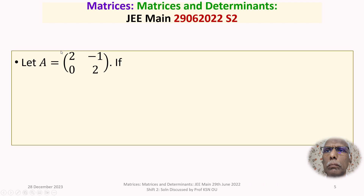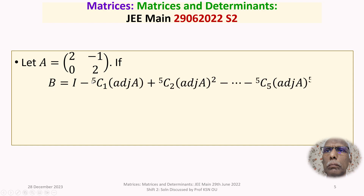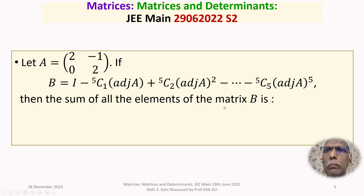The given question is: let A be a 2 by 2 matrix whose first row is [2, -1] and second row is [0, 2]. If B equals I minus 5C1 multiplied by adjoint of A, plus 5C2 multiplied by adjoint of A squared, and so on, minus 5C5 into adjoint of A to the power of 5, then find the sum of all the elements of matrix B.